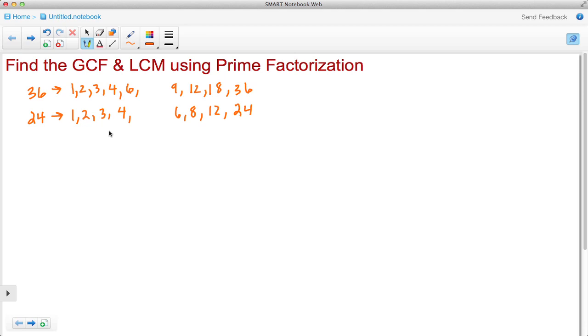5 doesn't work and we already have 6. Now to find the greatest common factor, we're trying to find the number that's the largest that they both have in common. We see here that 12 would be the GCF.